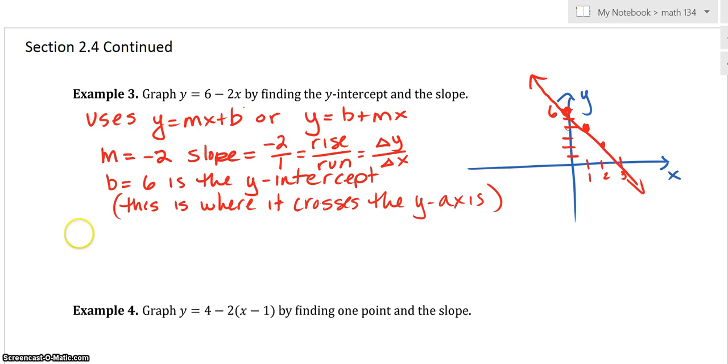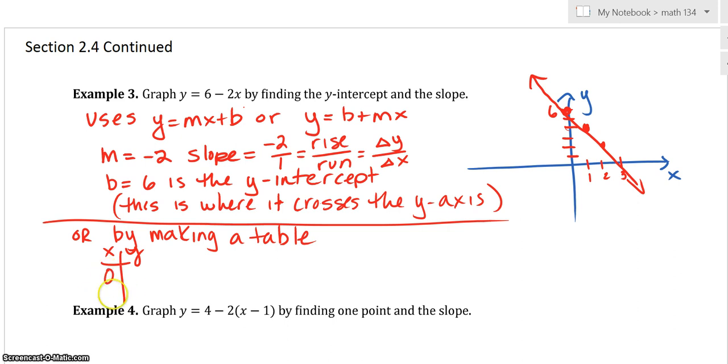Now, you could do it the old way, or by making a table. If we did make a table, we could pick a couple of points, like 0, maybe 1. Just to check it, at 0, we know we have 6.